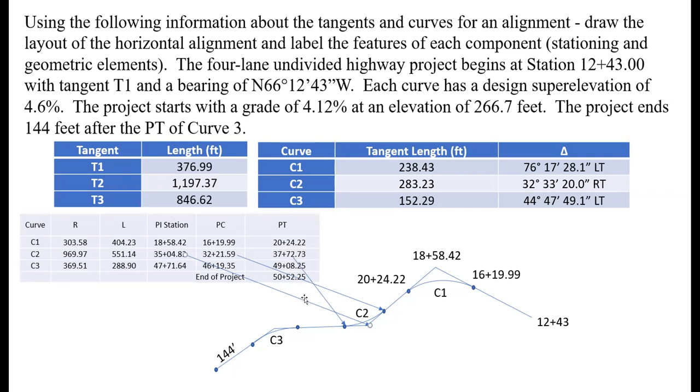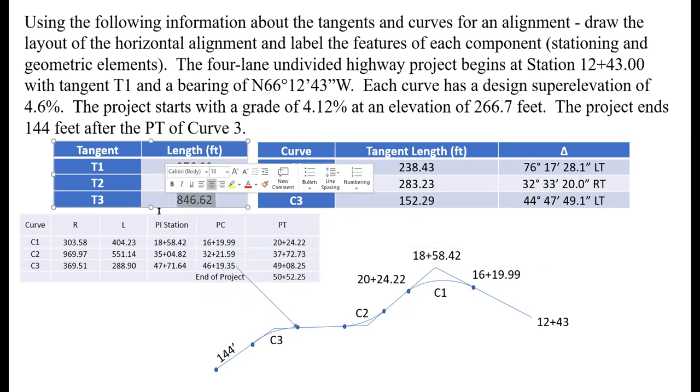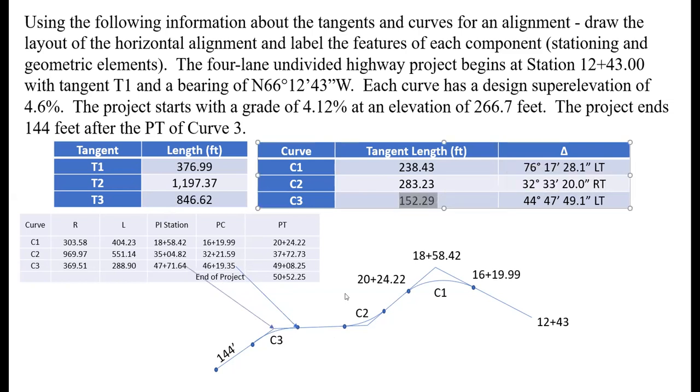Those are our points for curve two. I'm going to delete these lines so they're not too confusing. Our next point of interest is the PC for curve three. To get the PC of curve three we take the PT station of curve two and add our given tangent length of 846.62, giving us 46+19.35. We can find the PI station by adding the tangent length of 152.29 feet to our PC station. To find our PT we add the length of curve, 288.9 feet, to our PC, giving us a PT station of 49+08.25.